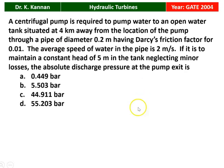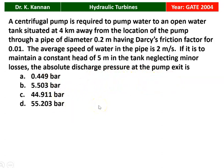The next question is from the 2004 question paper. A centrifugal pump is required to pump water to an open water tank situated 4 km away, through a pipe of diameter 0.2 meter having Darcy friction factor 0.01. The average speed of water in the pipeline is 2 meters per second. If it is to maintain a constant head of 5 meters in the tank, neglecting minor losses, the absolute discharge pressure at the pump exit is? The correct answer is 5.503 bar — that is the absolute discharge pressure at the pump exit. We will see how in the next slide.